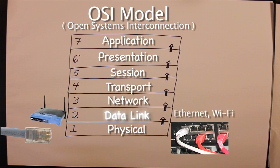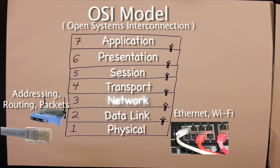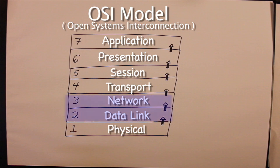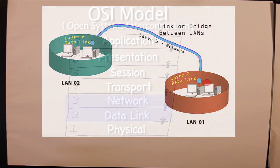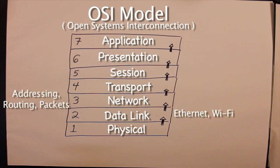Layer 2 is where protocols that are used to move data within a network reside, such as Ethernet frames. Layer 3, or the network layer, is used for protocols that move data from one network to another using packets. This is the layer used on the internet, as it only moves data in the form of packets between various networks around the world. What layer 2 does for layer 3 is move data to the edge of the network so it can be pushed out onto the internet, or another separate network, where layer 3 takes over control of the data.